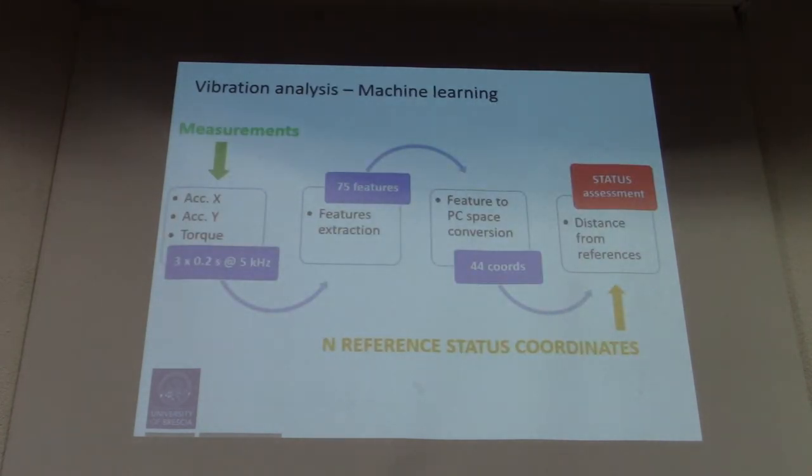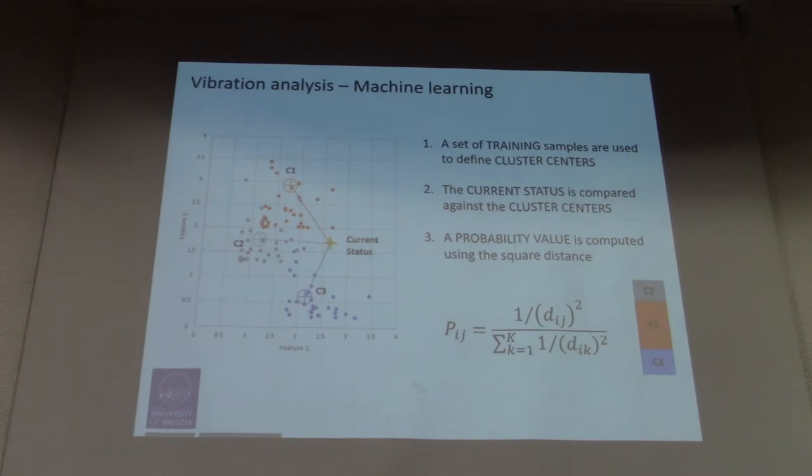Then, starting from these acquired quantities, we do machine learning. We calculate the features, we reduce them, and then we calculate the distance between each feature from a reference which is calculated through a training set of tests.